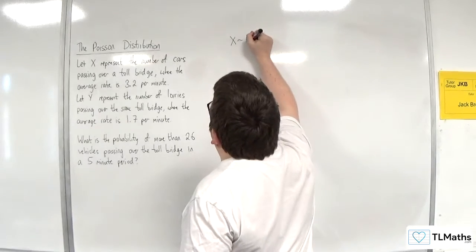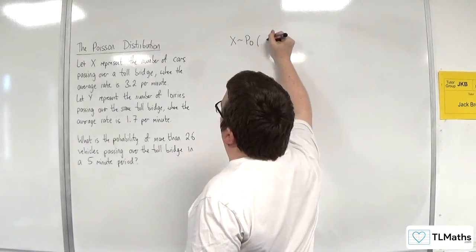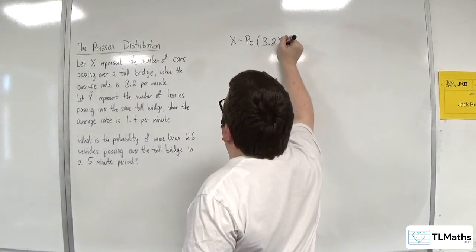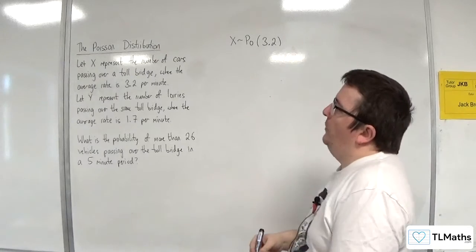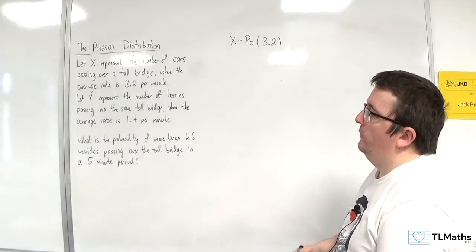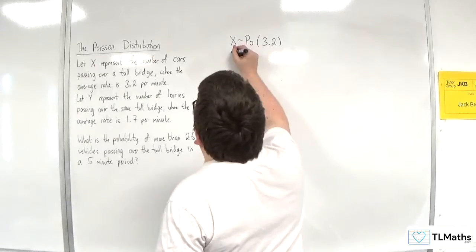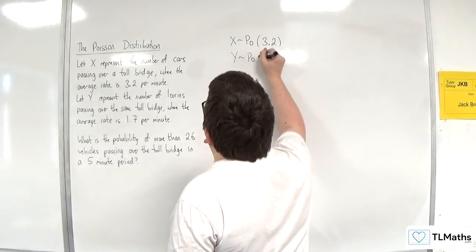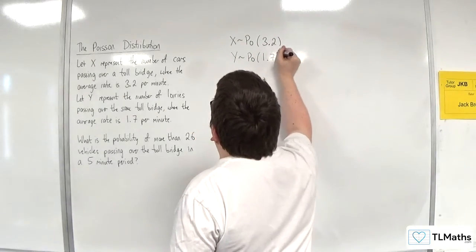So we've got X is a Poisson distribution, where we've got a rate of 3.2. Let Y represent the number of lorries passing over the same toll bridge, where the average rate is 1.7 per minute. So Y is a Poisson distribution, the rate of 1.7.